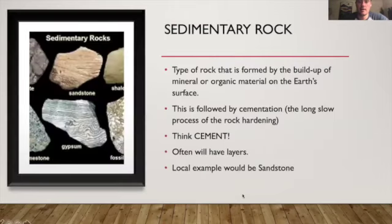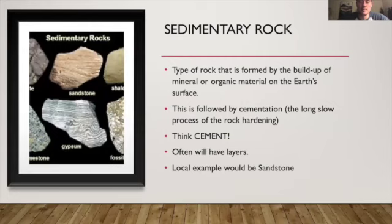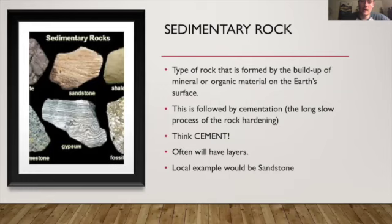Next, we have sedimentary rock. This type of rock is formed from the long-term buildup of different minerals and organic materials on the Earth's surface, not underneath. After this buildup, there's a long process called cementation — an easy way to remember that is to think of cement. All these different materials, like old plant material and minerals, compact over time and create a different kind of rock. This often has lots of layers. You might have heard of sandstone — those softer rocks that chip off easily are often called sedimentary rocks.